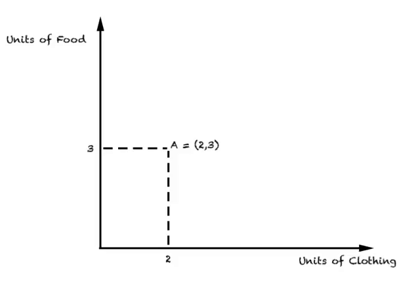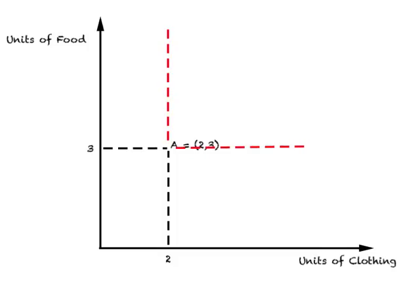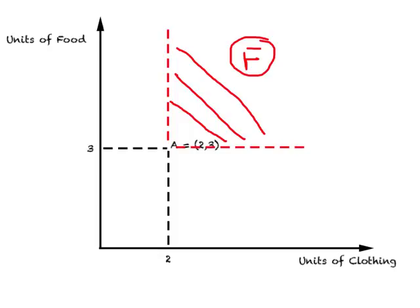Now what we do is divide this diagram into four quadrants. Consider any point which happens to be in the upper-right zone — let's call any point in this zone F. Now, given the assumptions we have made, how would you compare F and A?